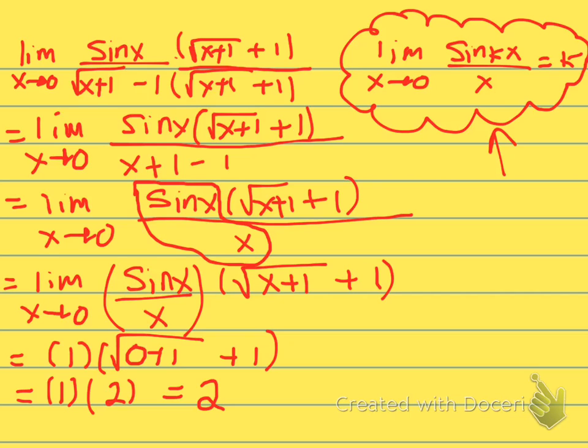So you get something that looks kind of complicated at the beginning and it works out perfect. Again, another method we can use - we talked about common denominator, dividing by X - another one we can use is the conjugate. Hope this helps and I will talk to you guys later.